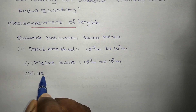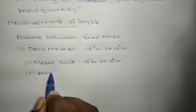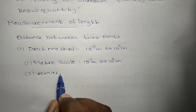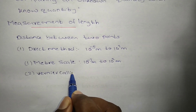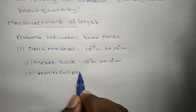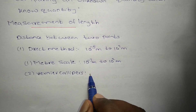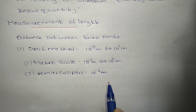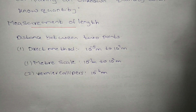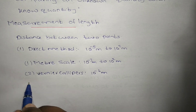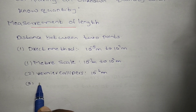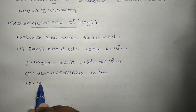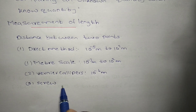The second device is the vernier caliper. The least count of the vernier caliper is 10 to the power minus 4 meters, that is 0.1 millimeter. You can also measure lengths using the vernier caliper.